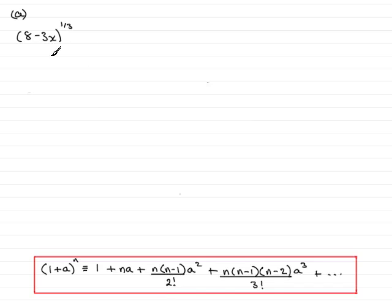When I look at this, the first thing I notice is that I've got an 8 here and to use the formula you've got to start with a 1. To get around this problem, what we need to do is say that this is identical to pulling out an 8 out the front of a bracket.